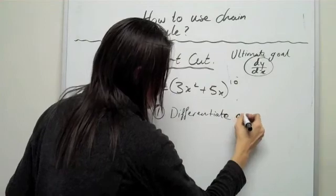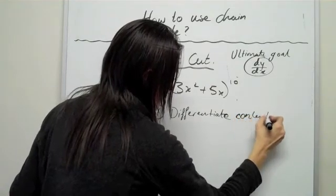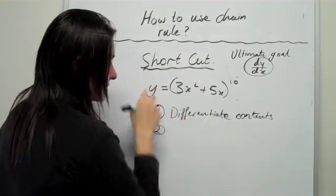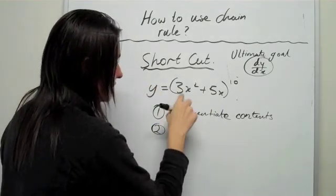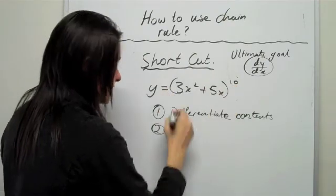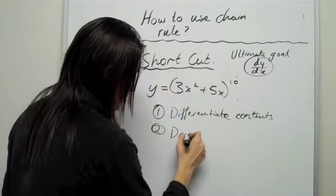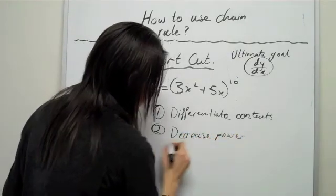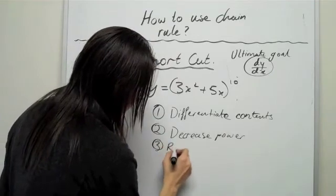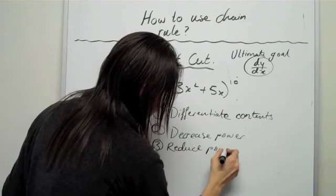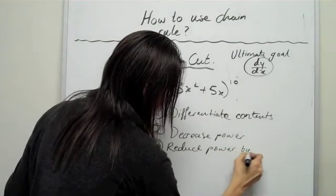Differentiate contents. The next thing you do is you put the contents on the outside, the derivative contents on the outside. And then you decrease the power downwards. So, decrease power. And then the third step is reduce power by 1. Reduce power by 1.